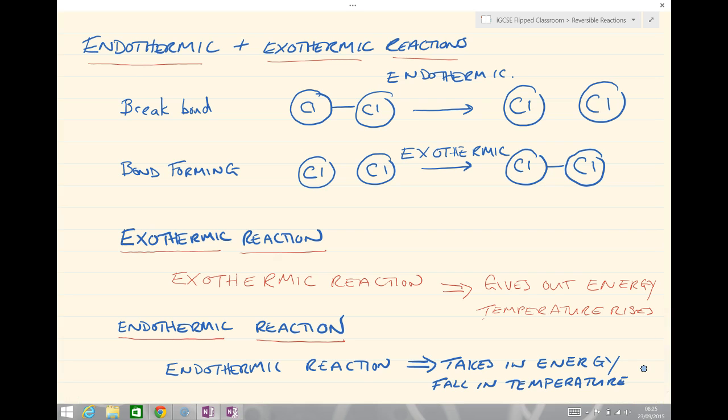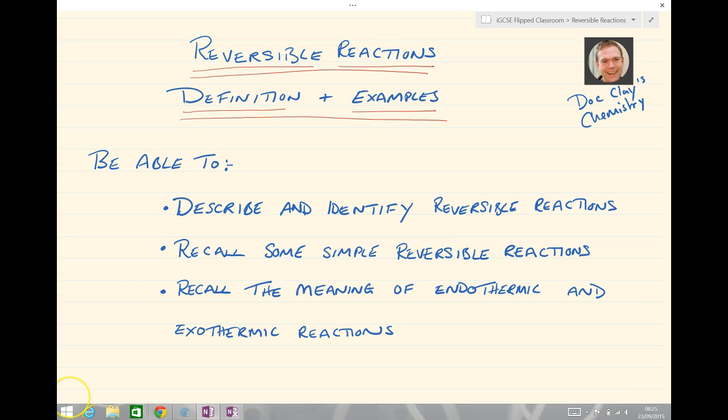So, that comes to the end of our lesson. We'll have a quick overview now, just to see what we should have recalled from today's session. So, just a reminder, we've looked at reversible reactions. Some definition and examples. And by now, you should be able to describe and identify reversible reactions. Recall some simple reversible reactions. Those were of ammonium chloride and copper sulfate. And, of course, recall the meaning of endothermic and exothermic reactions that we saw at the end. Okay, I shall see you soon. Bye for now.